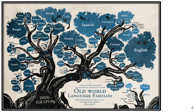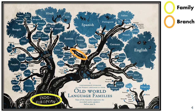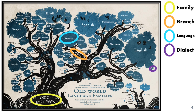A language family can also be shown as an actual tree where the trunk is your language family. Your language branches are the branches of the tree — we have Slavic, Germanic, and Romance languages. The individual languages are the group of leaves: Russian, Spanish, Portuguese, Italian, English, German, French, and all the other Indo-European languages. I like to say the leaves are our dialects or the words that make up the language. So dialects make up the language, the language makes up the branch, and the branches make up the family — that's why we have language family trees.